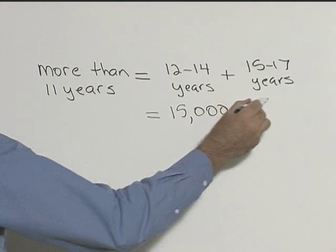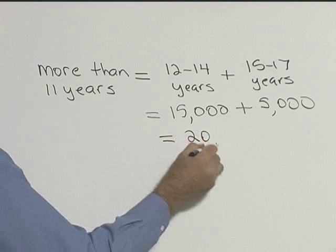So if we add those together, we get 20,000 TVs. So 20,000 TVs last more than 11 years.